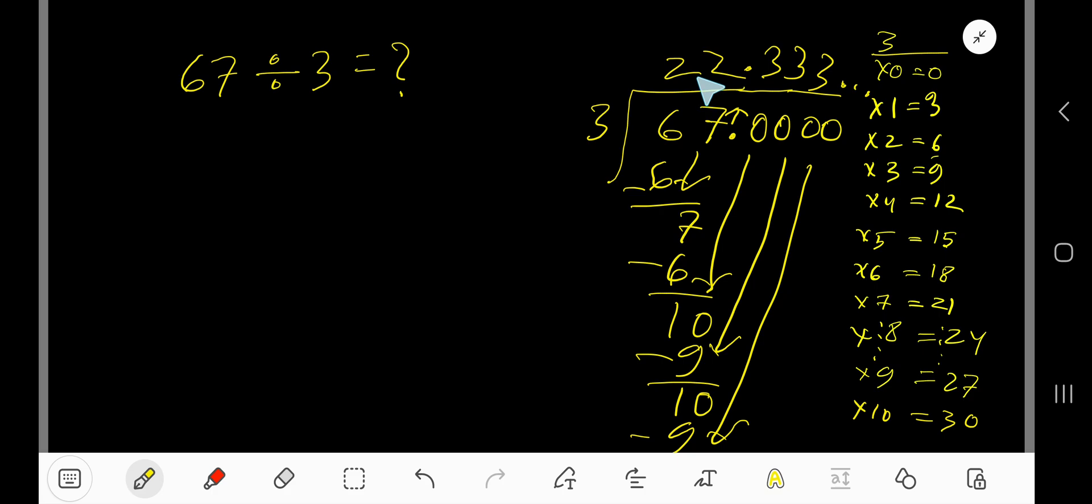So our answer is 22 point 3 3 3 3 dot dot dot. You can place a bar over 3 to mean that this 3 is repeating. So you can write the answer in two forms.